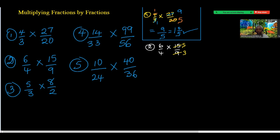Now look at the top and bottom: I have 6 at the top and 3 at the bottom, so 3 can still divide 6. 3 into 3 gives 1 and 3 into 6 gives 2. Then looking carefully, 2 can divide 4 — so 2 divides giving 1 here and 2 here. What remains at the top is 1 and 5 which gives 5, and at the bottom 2 and 1 which gives 2.